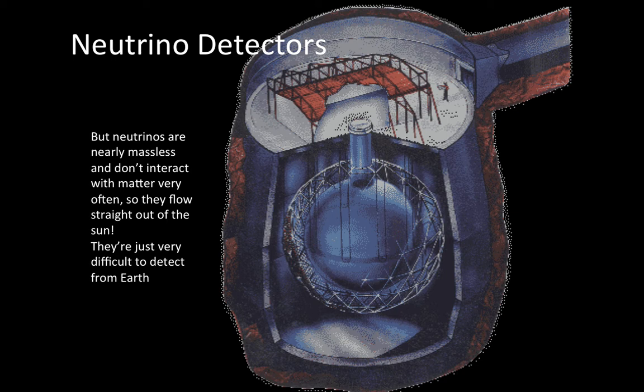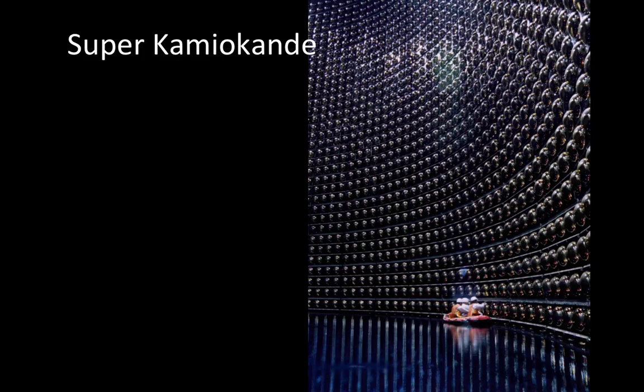We bury huge vats of what's essentially cleaning fluid in abandoned mine shafts, and line them with photodetectors, which can detect the tiny flash of light that's produced when that exceptionally rare neutrino interacts with a particle in the cleaning solution. In this picture, you see a crew at the Kamiokande neutrino detector in Japan, cleaning all of the photodetectors.